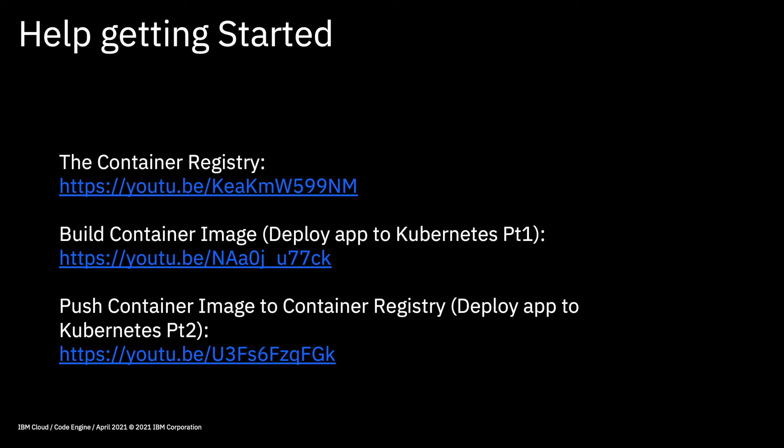The next video on this list will show you how to actually build a container image — how to build a Docker image. That's in the Deploy App to Kubernetes Part 1 video in this series, which shows you how to download the source code for the My Health app from my GitHub repository and create a Docker container from that source code. The third video, Deploy App to Kubernetes Part 2, shows you how to push the container image into the container registry, after which you're ready to deploy into Code Engine.